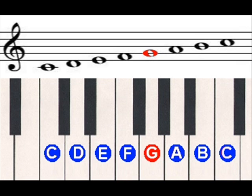So the second line up from the bottom is G, which means that the space directly above it is A and the space directly below it is F. So now let's look at each line and space in the treble clef and see which note it is.